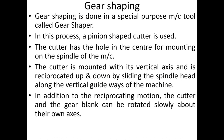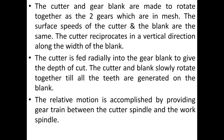The cutter is mounted with its vertical axis and is reciprocated up and down by sliding the spindle head along the vertical guideways of the machine. In addition to the reciprocating motion, the cutter and the gear blank can be rotated slowly about their own axes. The cutter and gear blank are made to rotate together as two gears in mesh, with the same surface speeds. The cutter reciprocates vertically along the width of the blank and is fed radially into the gear blank to give the depth of cut.